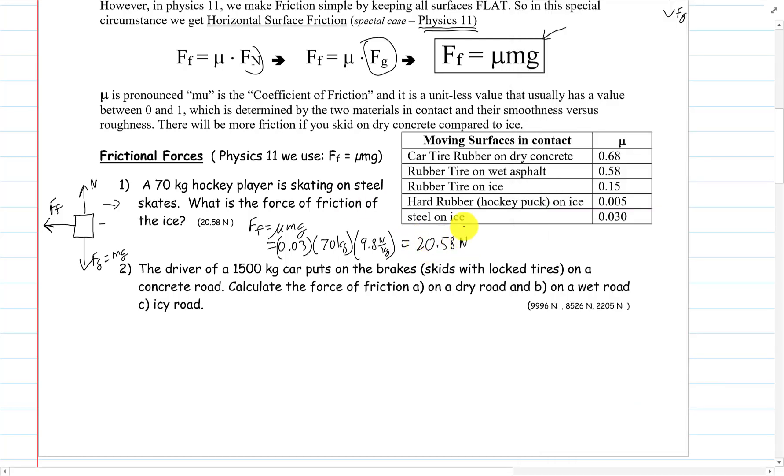The driver of a 1500 kilogram car puts on the brakes, skids with locked tires, so that means they're actually sliding. These are moving surfaces on a concrete road. Calculate the force of friction on dry road, wet road, and icy road. The force of friction equals mu mg, which is going to equal mu on a dry road.